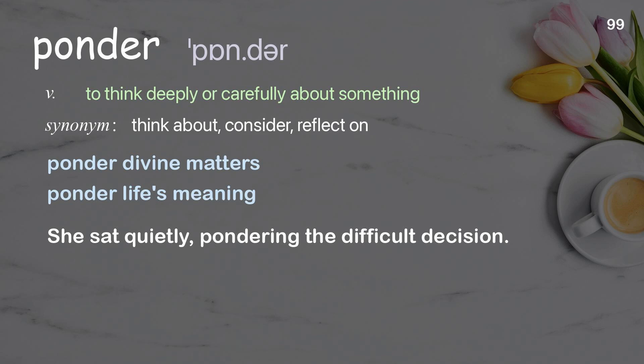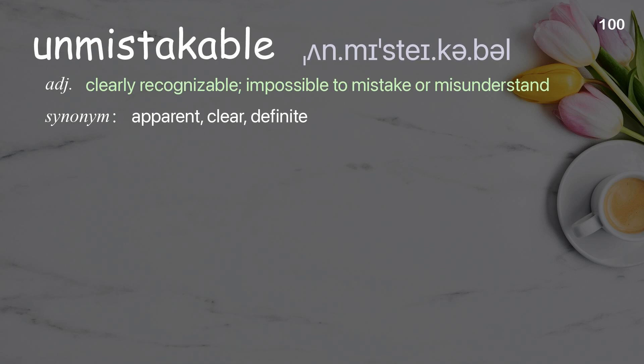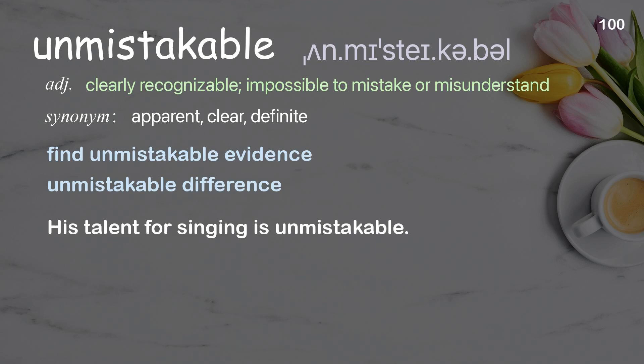Unmistakable: clearly recognizable; impossible to mistake or misunderstand. Examples: find unmistakable evidence, unmistakable difference. His talent for singing is unmistakable.